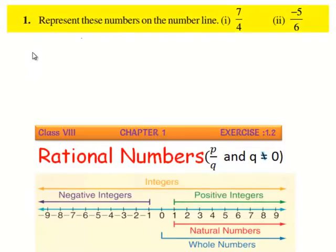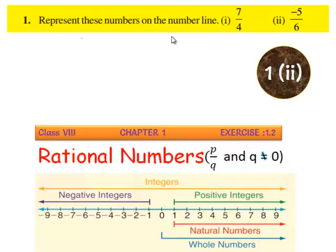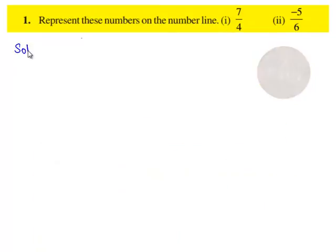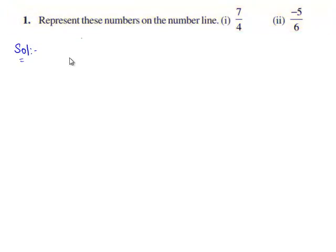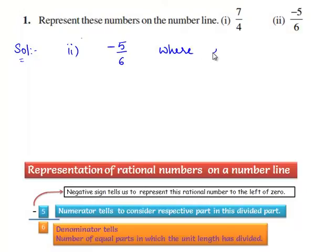Now, let us move on to the next exercise. The first question is: represent these numbers on the number line. There are two bits given. The first bit is 7 by 4 and the second bit is minus 5 by 6. Let us first solve the second bit, then move on to the first bit. In the second bit, the rational number given is minus 5 by 6. It is in the standard form p by q where q is equal to 6, and it is a negative rational number. Therefore, it lies on the left side of 0 in the number line.